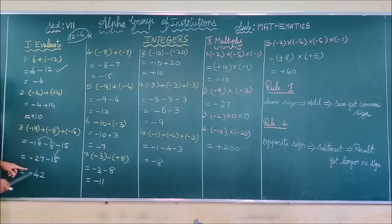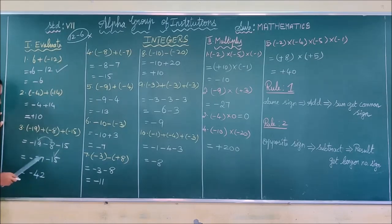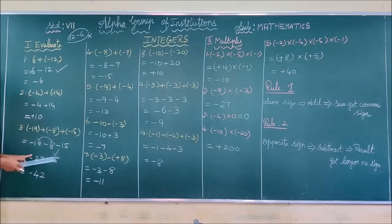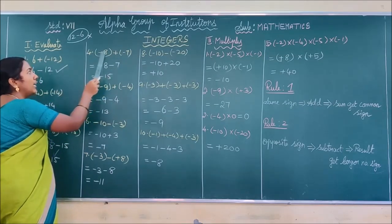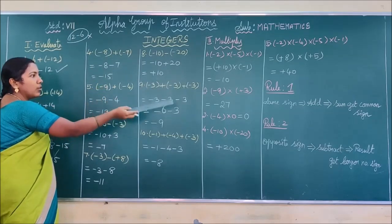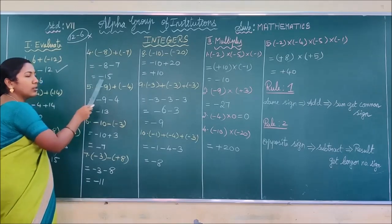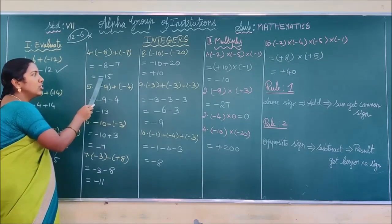Some students in the last step think minus into minus gives plus, but that is wrong. Here the operation is addition, not multiplication. While removing brackets, you write plus into minus giving minus. After that, since there are no more brackets, you just add the integers following Rule 1. The given integers are the same sign, so add and take the common sign minus. For example: minus 8 plus (minus 7) becomes minus 8, plus into minus gives minus 7. Same sign, so 8 plus 7 = 15, answer is minus 15.